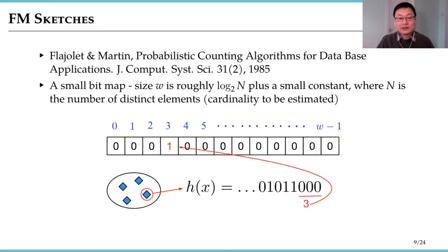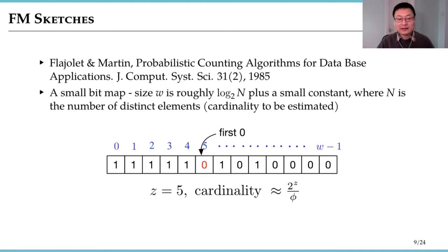To count a set or a multi-set, what we can do is we take the elements from the sets, hash it, and then we count how many zero bits are at the end of the hash value. The number then is used as the index to set the corresponding bits to one in the sketch. After processing all data, we take the sketch and then we find out where is the first zero bit. The index is denoted as Z and we can estimate the cardinality by two to the power of Z divided by a constant phi.